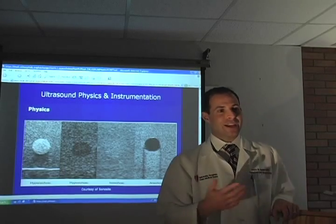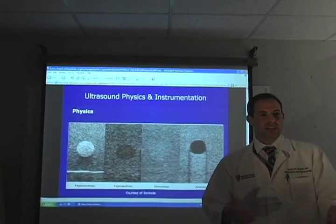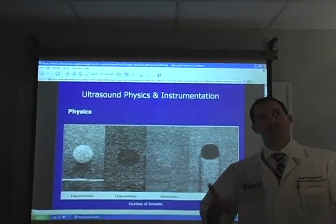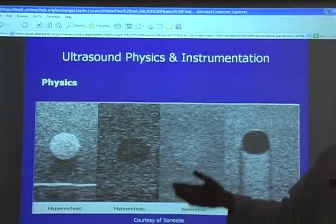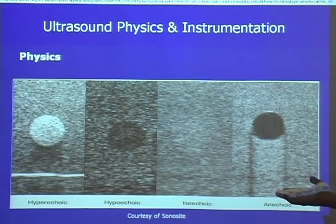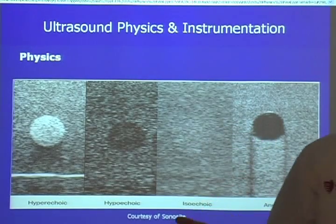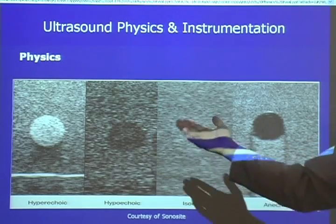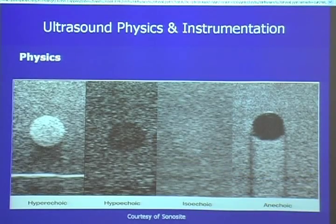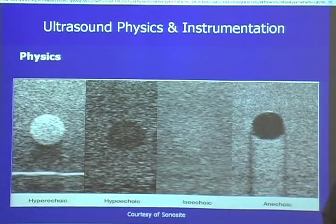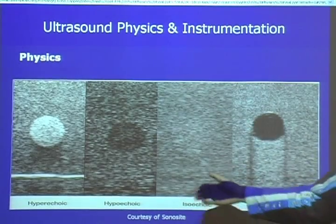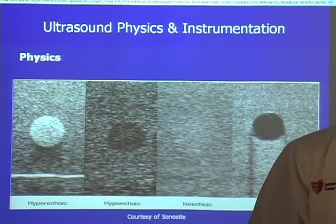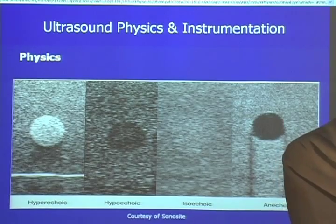The language we use to describe ultrasound images has to do with echogenicity. That's how we describe the ultrasound characteristics of tissue. In an example of scanning circles, a circle can be described relative to the background: a circle that is brighter than the background is hyperechoic; one that is darker is hypoechoic; something like amniotic fluid, which permits large amounts of waves to pass through without reflection, is anechoic; and anything that blends with the background in grayscale is isoechoic. Echogenicity is the key language of ultrasound.